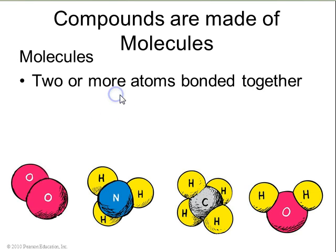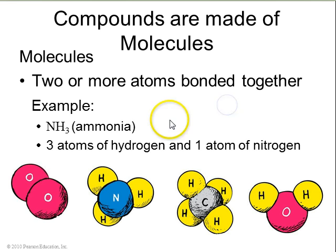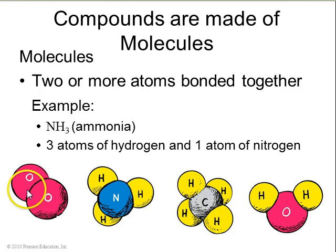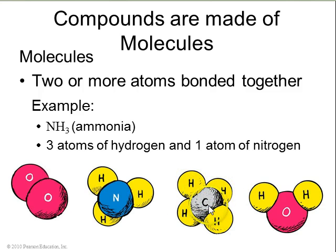Compounds are made of molecules — molecules are when two or more atoms are bonded together. For example, NH3 is one nitrogen and three hydrogens all bound together — that's a molecule of ammonia. There's a cartoon diagram of an ammonia molecule here. To the left of it is an oxygen molecule — two oxygens bonded together. Here's a methane molecule, a carbon with four hydrogens bonded to it, and here's a water molecule, which is H2O.